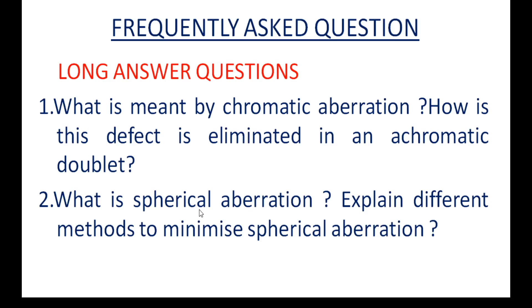With the distortion topic, unit 1 is now complete. The topics in unit 1 include: introduction to aberration, chromatic aberration, achromatic doublet — two lenses in contact and separated by a distance — then monochromatic aberrations: spherical aberration, coma, astigmatism, distortion, and curvature of field with minimization methods. All topics in the first unit are now discussed and the first unit is completed.